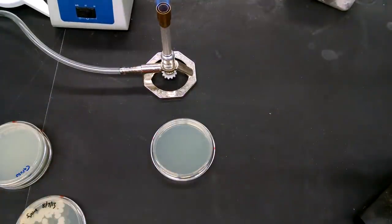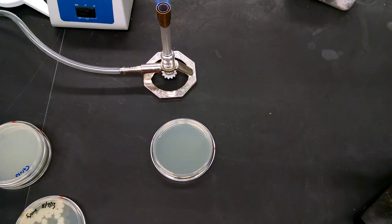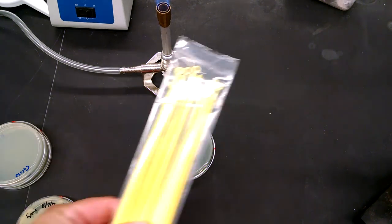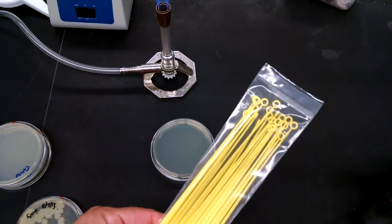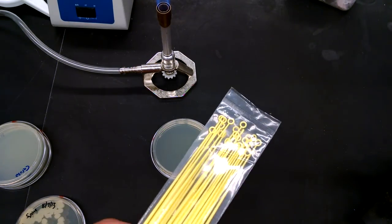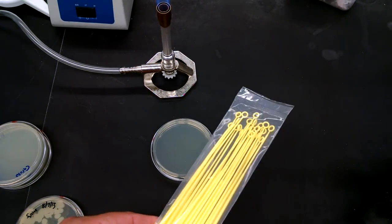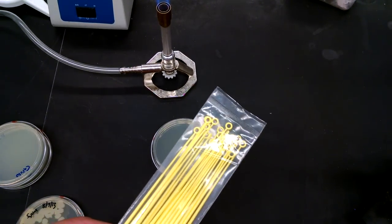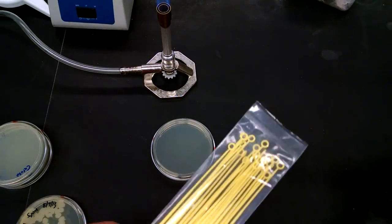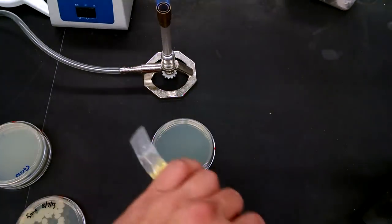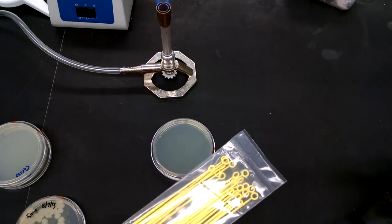Streaking a plate is really easy. What you need is something to streak with, and those are loops. We're going to use disposable loops. If you use a reusable loop, a titanium or steel loop, the procedure is only very slightly different. You flame the loop each time. With these disposable loops, they're sterile, they're in a bag. We're not going to flame them.